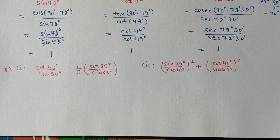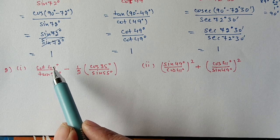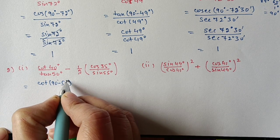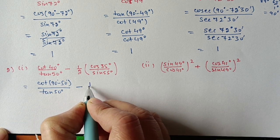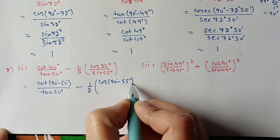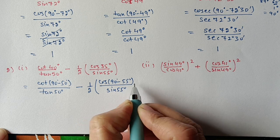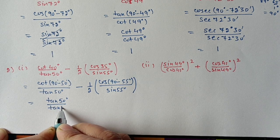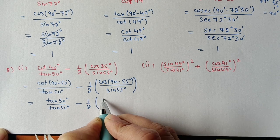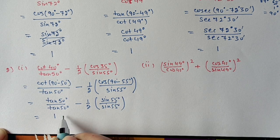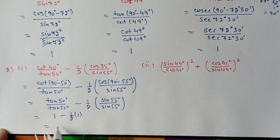Question 2, first part: cot 40° / tan 50° − ½ · cos 35° / sin 55°. For the first term, write cot 40° = cot(90° − 50°) = tan 50°, so the first term = 1. For the second term, write cos 35° = cos(90° − 55°) = sin 55°, so the second term = sin 55° / sin 55° = 1. The answer is 1 − ½ = ½.